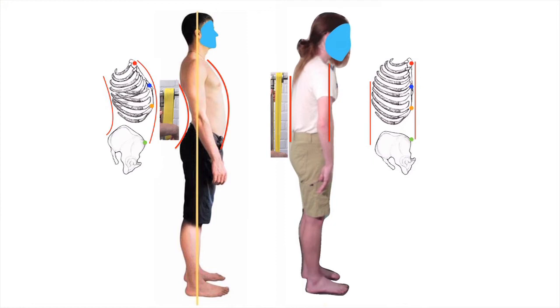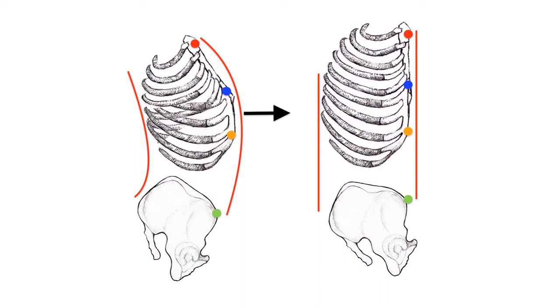So your thoracolumbar fascia, which goes up and down the length of your spine, is made slack. When your thoracolumbar fascia is shortened and slack, the front of the body sags forward, and the ribcage as a whole will sag down towards the pelvis.